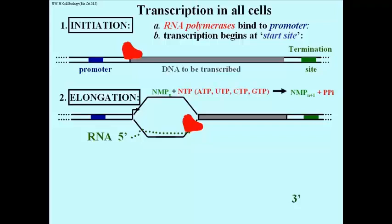One of those NTPs is added next based on the base in the template strand being transcribed. The result is a nucleotide monophosphate chain that is N plus 1 nucleotides. Each new addition is accompanied by the hydrolysis of a pyrophosphate — two phosphates off the end of the nucleotide — as the nucleotide is added to the new chain by a condensation reaction.